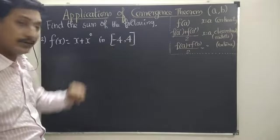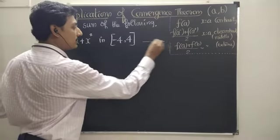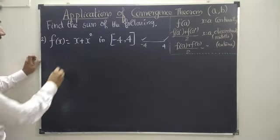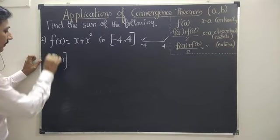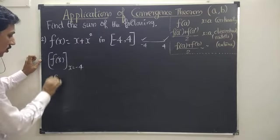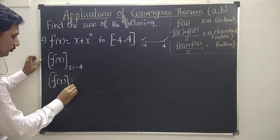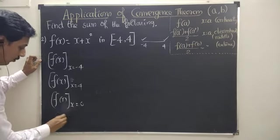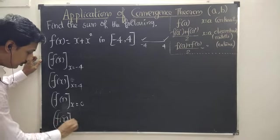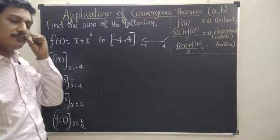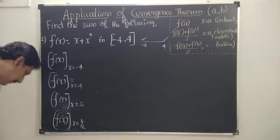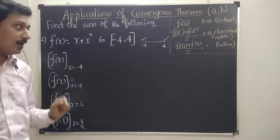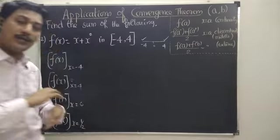Closed interval minus 4 to 4. So these two points are included — they are points of continuity. I need to find: f of x at x equal to minus 4, f of x at x equal to 4, f of x at x equal to 0, and f of x at x equal to 1/2. In this problem, it is a closed interval — all the points are included, meaning all the points are continuous.